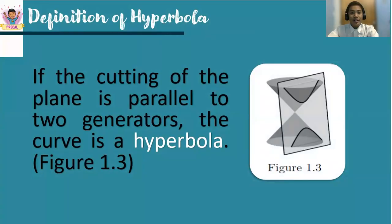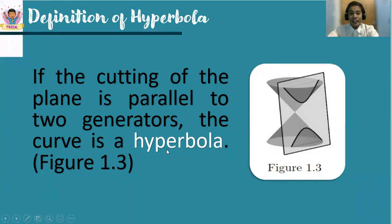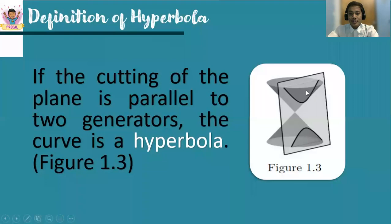Recall the discovery of Apollonius of Perga. If the cutting of the plane is parallel to two generators, that curve is a hyperbola. Observe figure 1.3 — how the cutting of the plane intersects the double right circular cone. It forms a hyperbola.